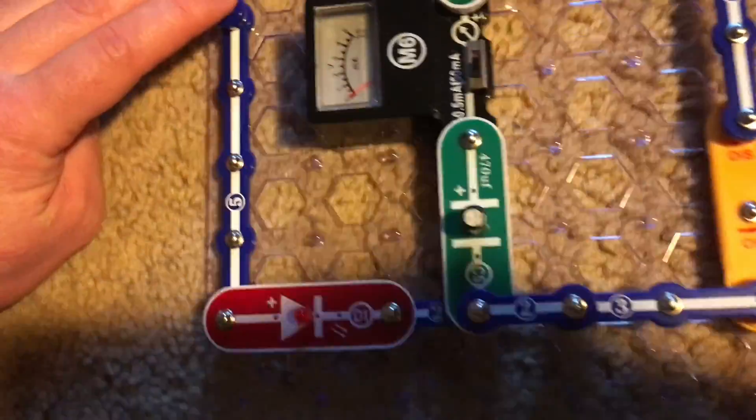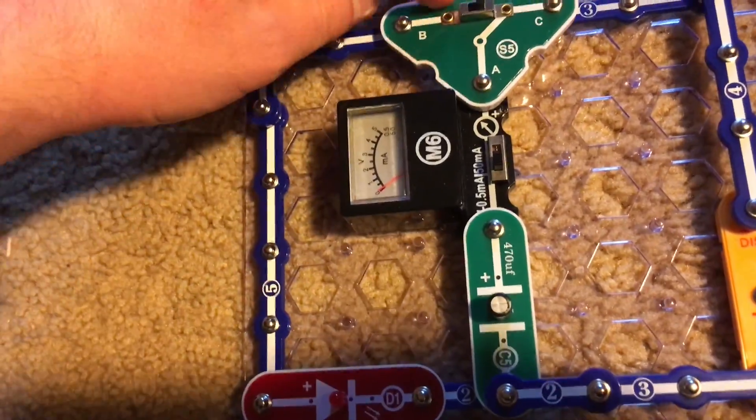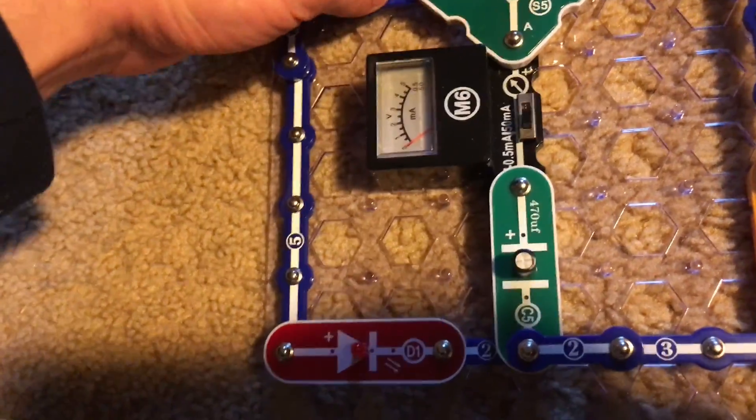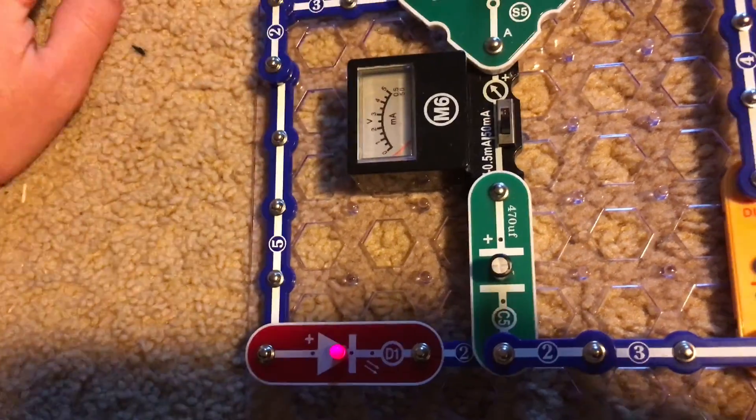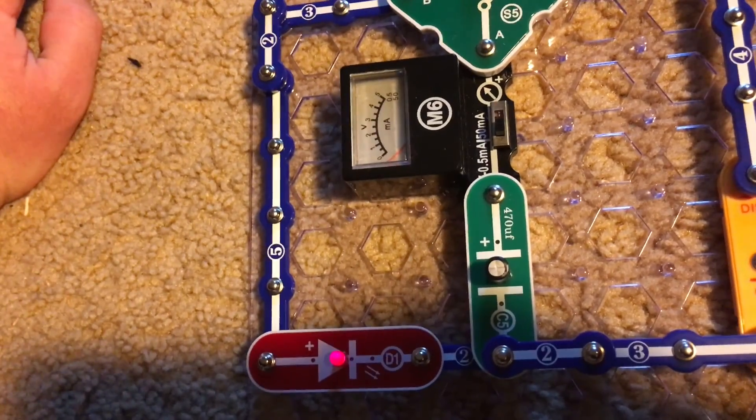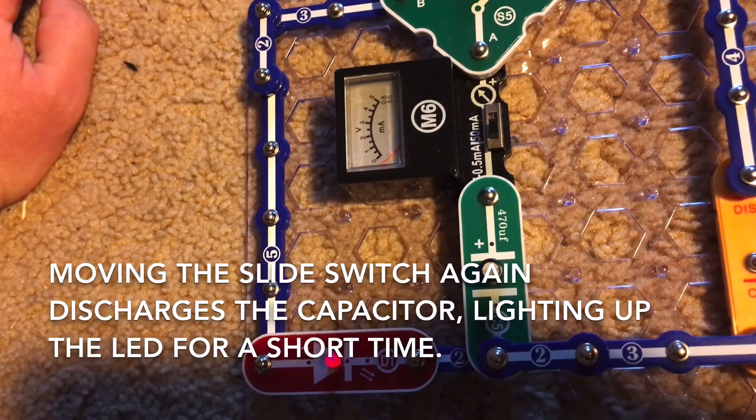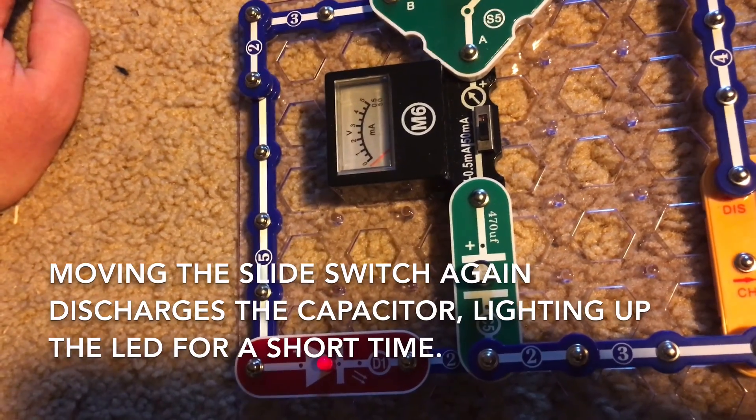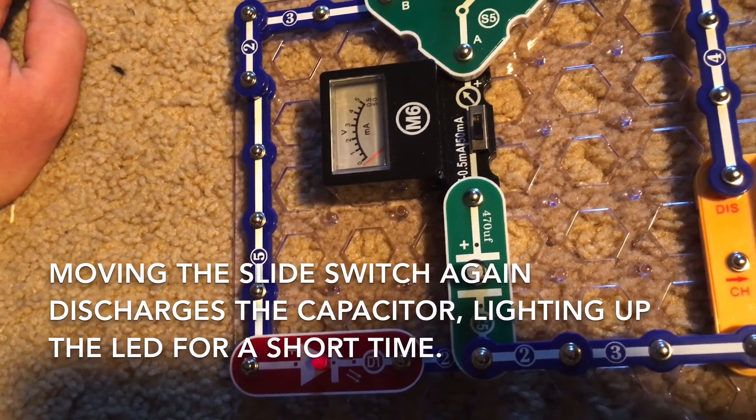Now watch the LED as I move the slide switch back to position B. It comes on and will stay on for a short while because the capacitor is discharging the current through the LED.